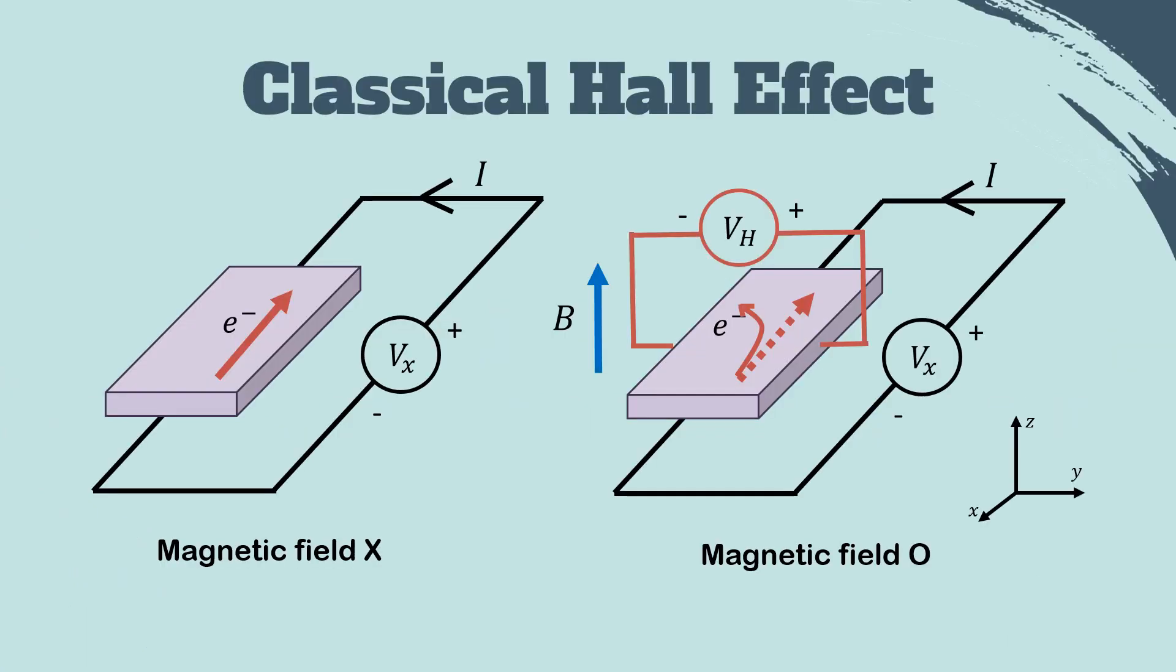Consider a two-dimensional conducting plate with an applied electric field. Without the magnetic field, the electron will move in the negative direction of the current. However, in the presence of an applied magnetic field, the electron in the plate will actually flow in a direction perpendicular to the current.